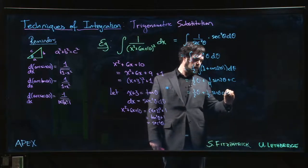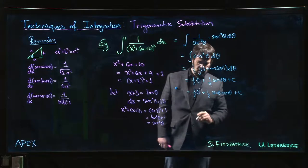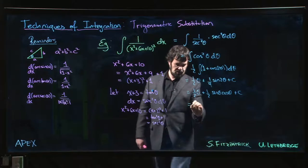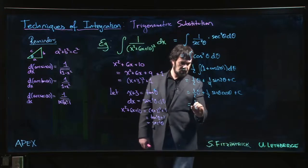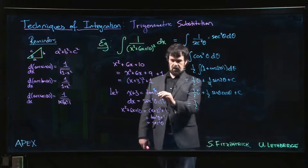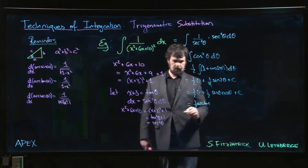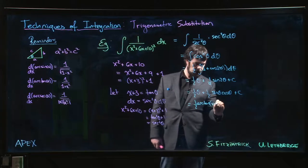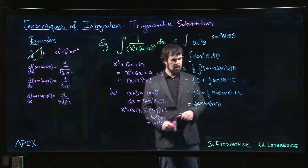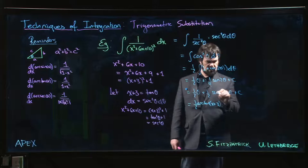Now we can get it back in terms of x. So theta is arc tan of x plus 3. Now for sine theta cos theta, here's one where you can fiddle around with identities but you'd probably rather draw the little triangle.